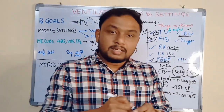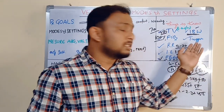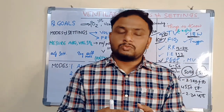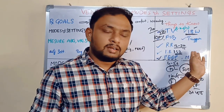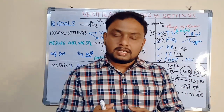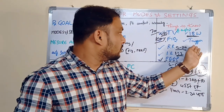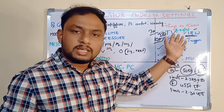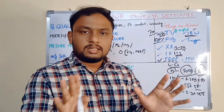Trigger — how many breaths are being generated, how much air is flowing. There are different types: time trigger, cycle trigger, patient trigger. These are the common terminologies — five to six terminologies you will see on the ventilator screen: tidal volume, FiO2, respiratory rate, IE ratio, PEEP, minute ventilation, ideal body weight, triggers.